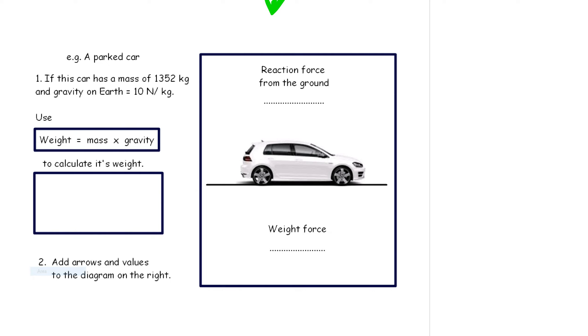Let's have a look at this parked car. A parked car has a mass of 1,352 kilos and gravity on Earth is 10. If we want to work out its weight force, its weight force is this in this direction. Let's work out its weight force. Its mass multiplied by its gravity. They're the workings. The answer is 13,520. The units are newtons.